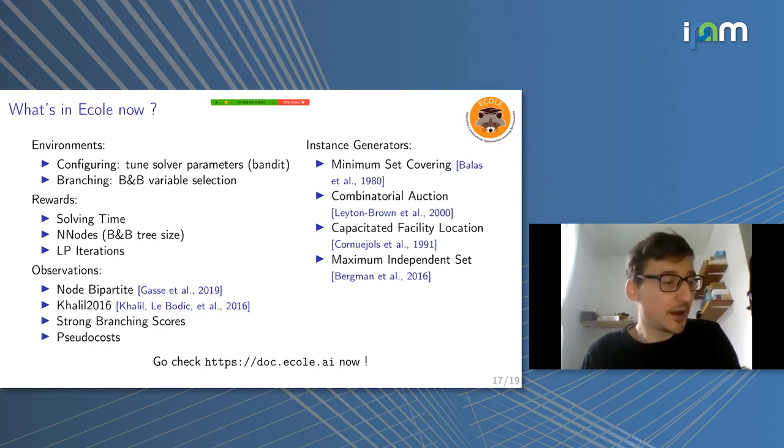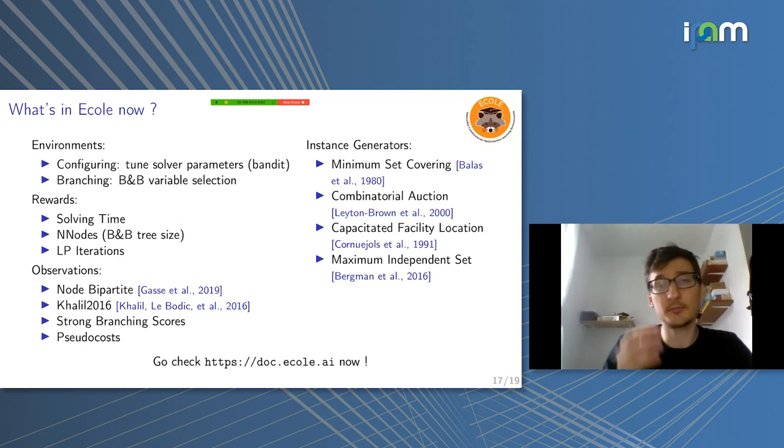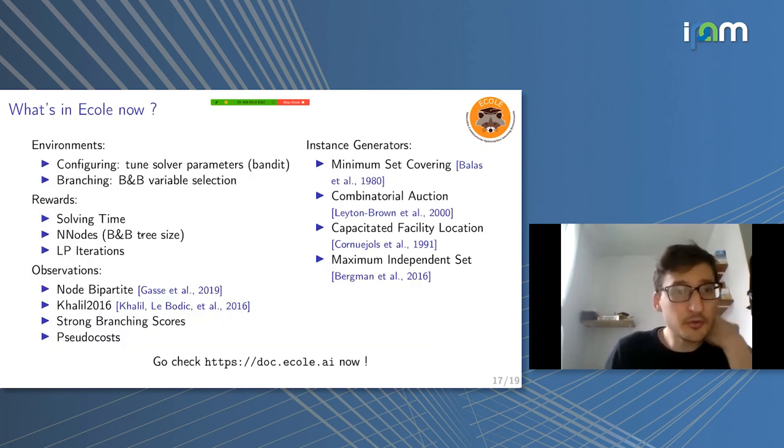What's inside the library at the moment? We have two environments. Configuring, basically, you can do parameter tuning with this environment. It's just a bandit problem. It's just one step. You choose parameters, it solves, and it gives you back the final reward. We also have the branching environment, which has been presented earlier by Laurent, but also by Vinod. We have a few rewards, so some natural rewards: solving time, number of nodes, number of LP iterations, which you may want to minimize.